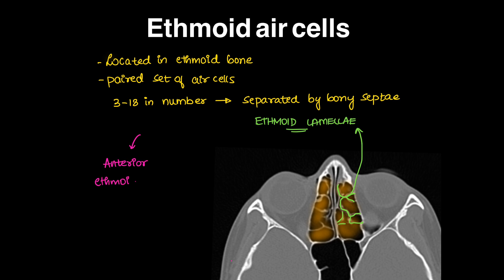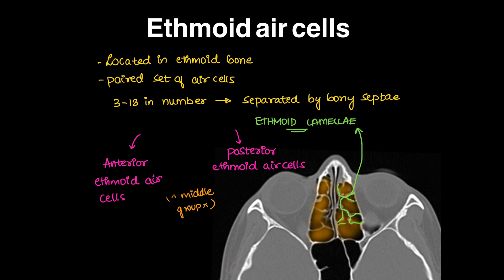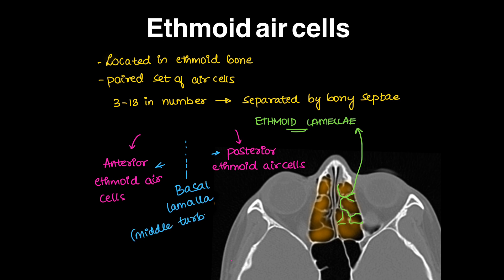Ethmoid air cells are divided into two groups: the anterior ethmoid air cell group and the posterior ethmoid air cell group. There was a middle ethmoid air cell group, which is now obsolete. The dividing factor between anterior and posterior groups is the basal lamella of the middle turbinate.